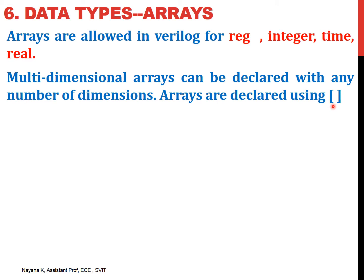The difference is: for vectors, the square bracket appears before the name of the variable, but for arrays, the square bracket appears after the name of the variable. Let us look into examples. Here, we are declaring an array whose name is count. The square bracket is written after the name of the variable. The number of elements in the array is specified by the dimensioning, where we mention the 0th element first and the 7th element, going in the order of index numbers with the smaller number first.